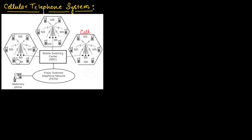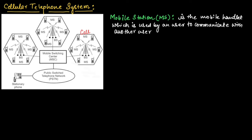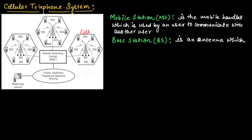This is the basic structure of the cellular telephone system. The mobile station is the mobile handset used by a user to communicate with another user. A base station is an antenna controlled by a small office — wherever you see a tower, that tower is controlled by a small office.